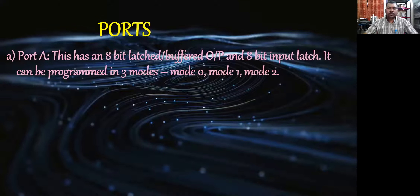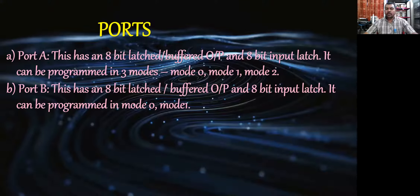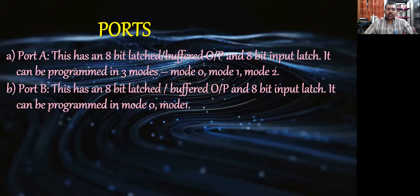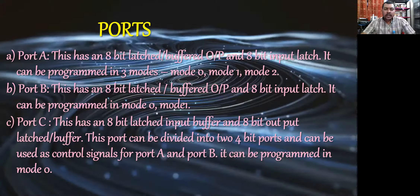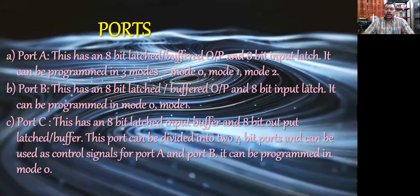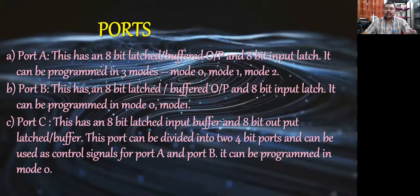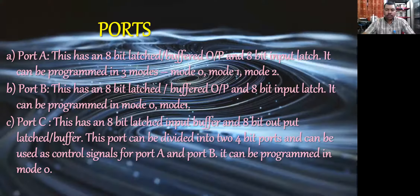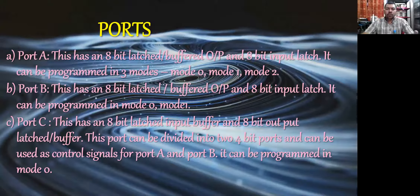Port A has an 8-bit latched/buffered output and 8-bit input latch and can be programmed in three modes: mode 0, mode 1, and mode 2. Port B has an 8-bit latch/buffer and works only in mode 0 and mode 1. Port C has an 8-bit latched input buffer and 8-bit output latch/buffer. It can be divided into two 4-bit ports and used as control signals for port A and port B; it can only be programmed in mode 0.